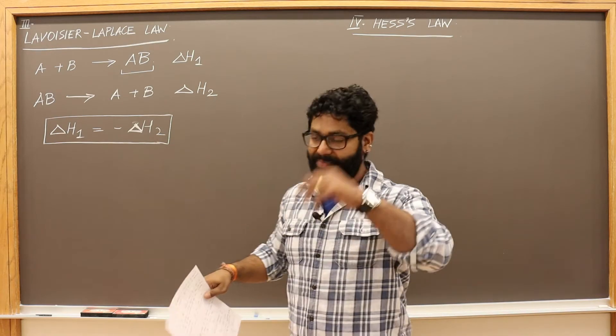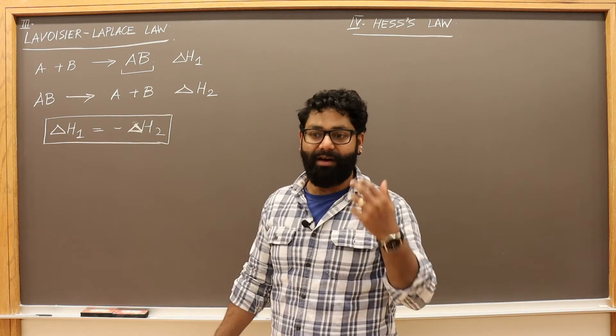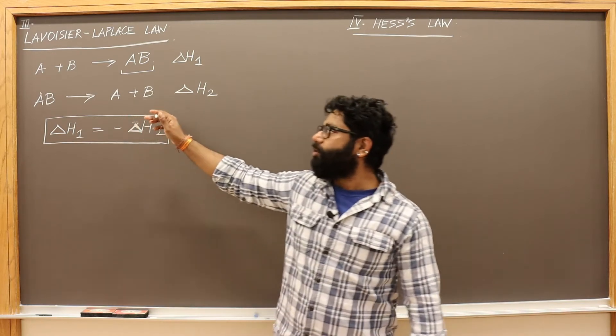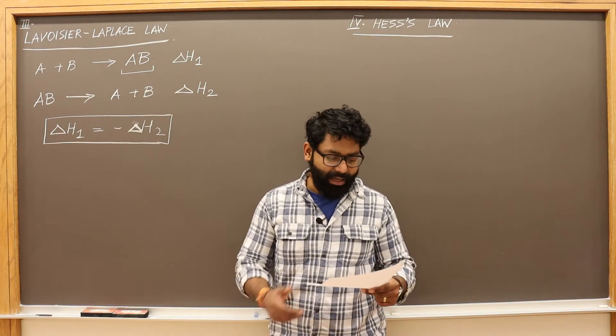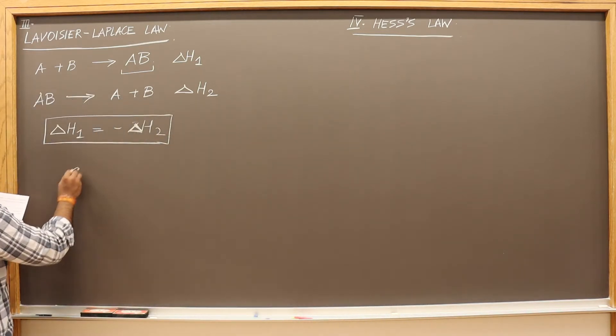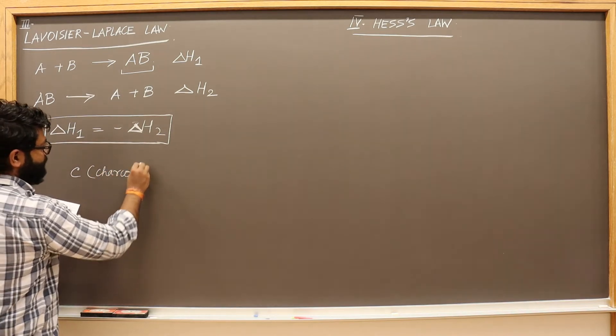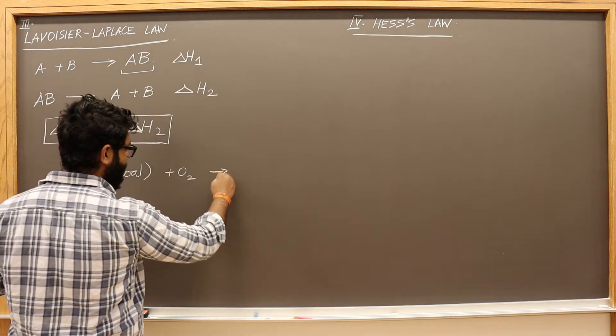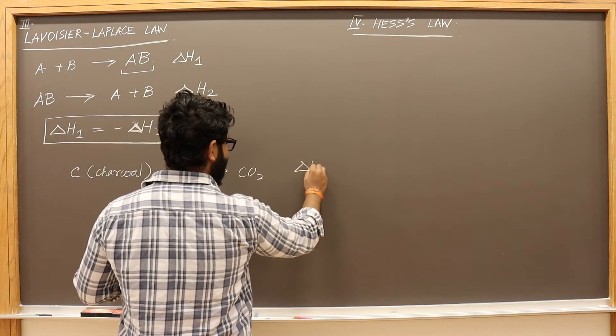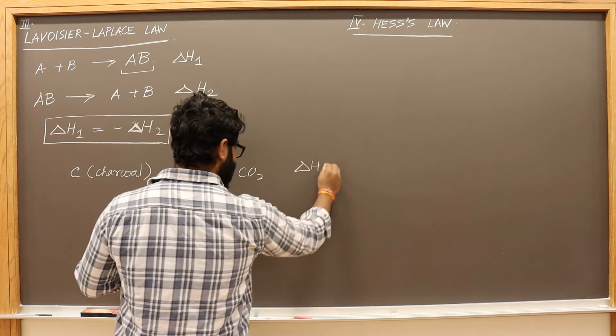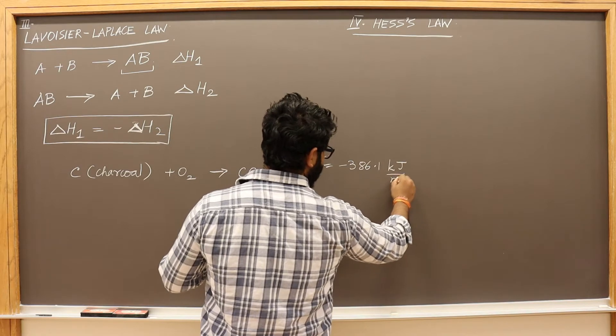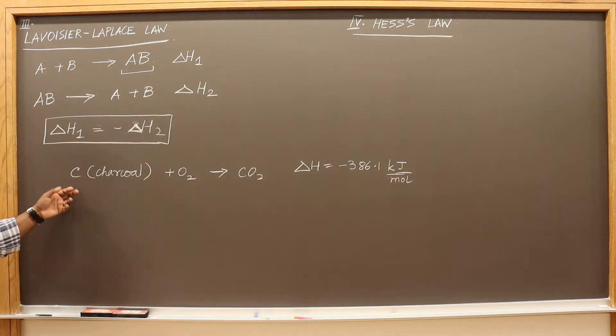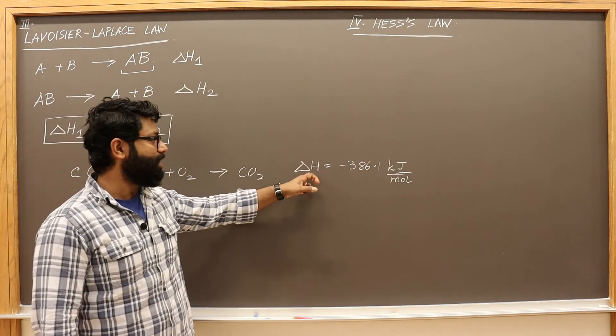This is very intuitive but extremely important. Now imagine that you are 200 years back, you are trying to find out whether, say this equation—if you have charcoal, you are burning charcoal in oxygen and you are getting CO2, the delta H of the reaction was negative 386 kilojoule per mole.